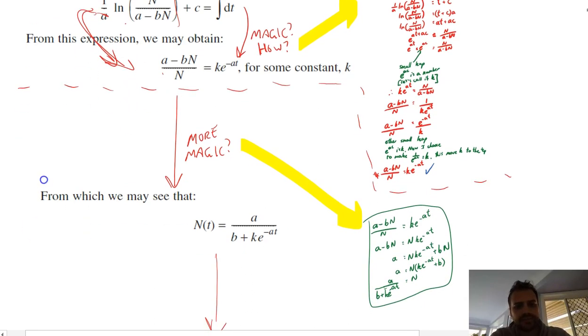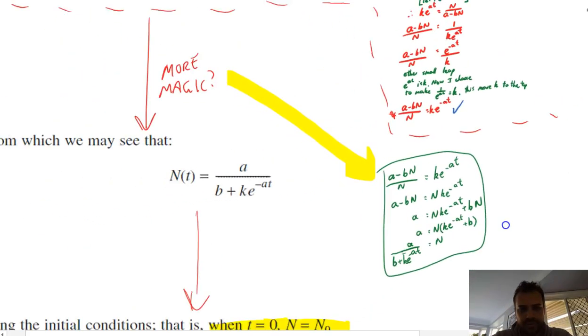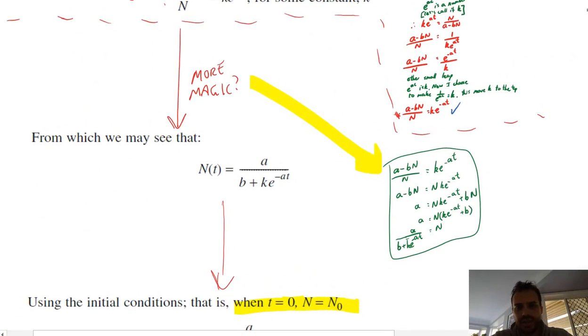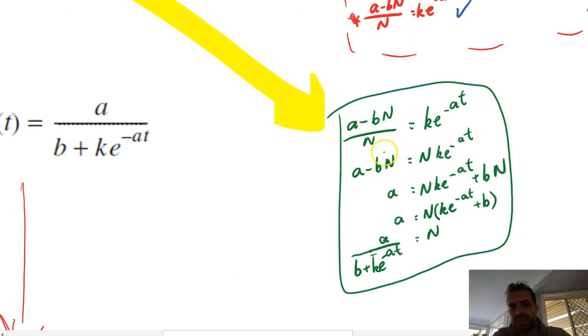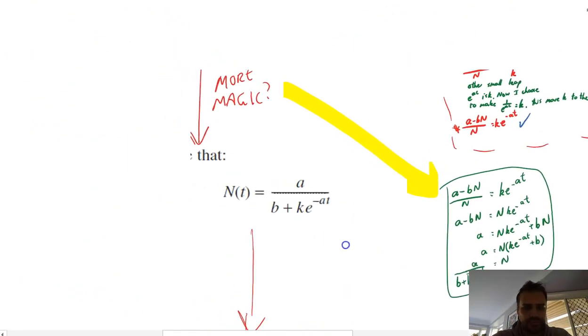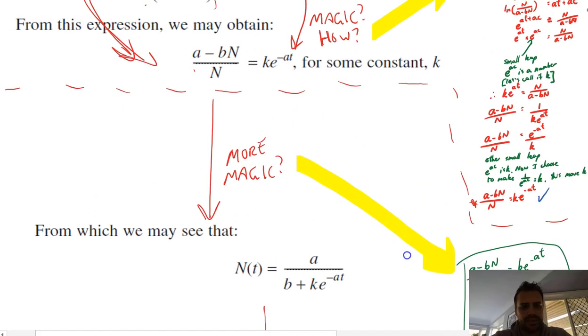Okay. And then they do what I would say is just a little bit more magic. Because they get from a to the negative b n over n equals ke to the negative a t. All right, where are we? So to do that, you can follow these steps here. Actually, it's not too magical. Multiplying by n, bringing b n to the other side and factorizing n out. Basically, we're just making n the subject of that.